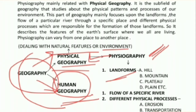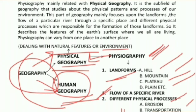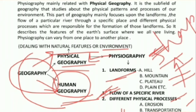We have several major landforms on the earth's surface: hills, mountains, plateaus, plains, etc. Most importantly, rivers and different physical processes like erosion, transportation, and deposition are very important for giving a particular shape to a particular landform. So I think all of you now have the idea of physiography.